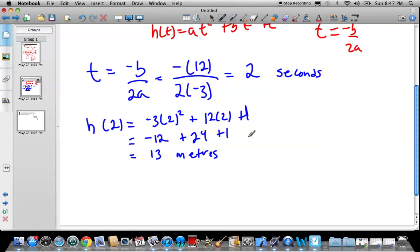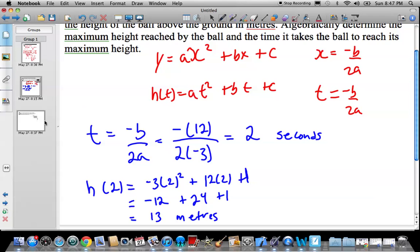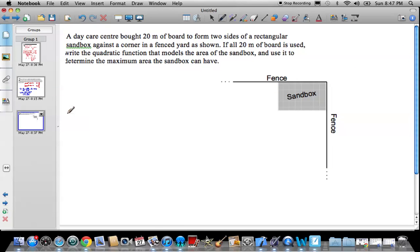Now this one's a good question. A typical public exam question. This one's also a typical public exam question. It's just a little bit harder. But we still have to use the axis of symmetry. So a daycare bought 20 meters of board to form two sides of a rectangle. So you see, here's one and here's two. So if all 20 meters of board is to be used, write a quadratic function that models the area of the sandbox and use it to determine the maximum area the sandbox can have.